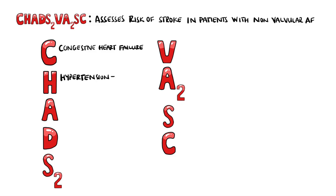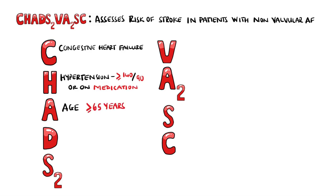H stands for hypertension, which includes patients with readings of 140 systolic and 90 diastolic persistently, or if they are on medication for hypertension. The first A is for age above 65 years, and D is for diabetes mellitus.